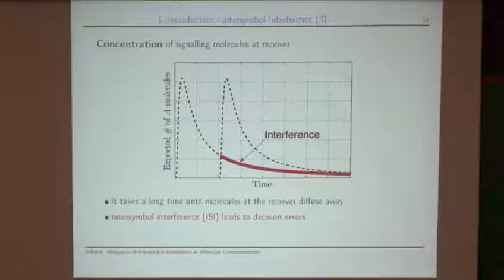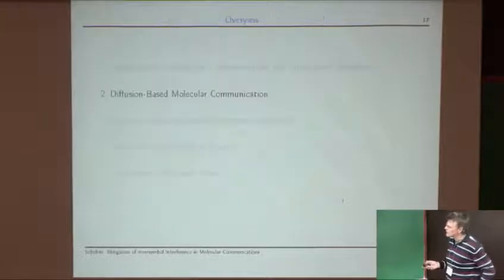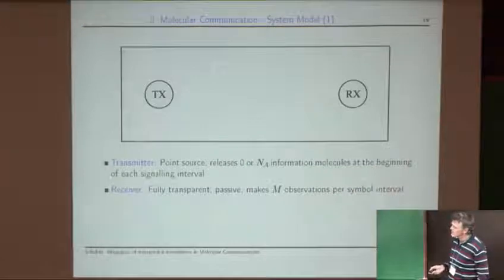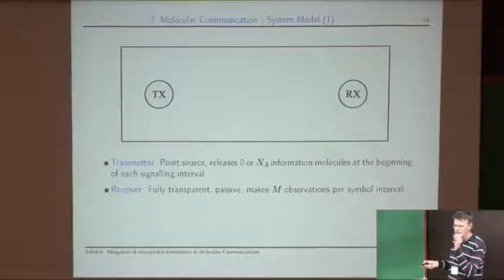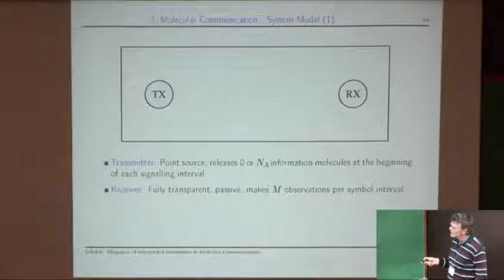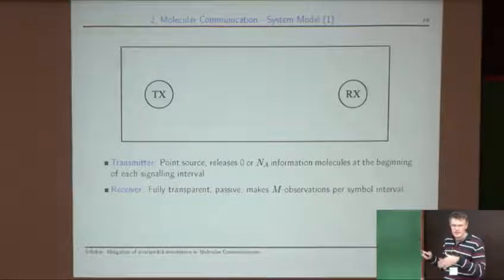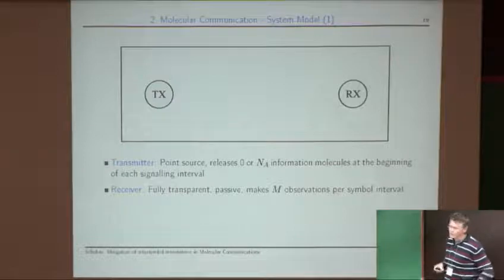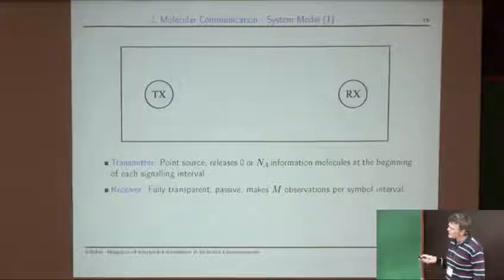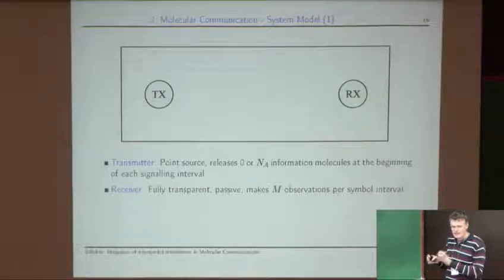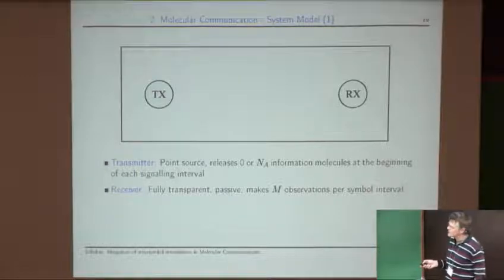Now I make the model more precise. We assume a point source — a singular point that releases zero or N_A information molecules instantly. This is physically not possible, but useful for modeling. The receiver is modeled as fully transparent and passive: it counts molecules that pass through it at a given time, and can count M times in one symbol interval. These are very simple models for both transmitter and receiver.